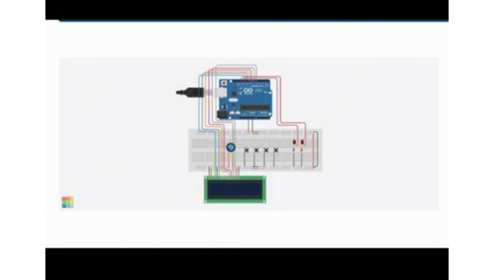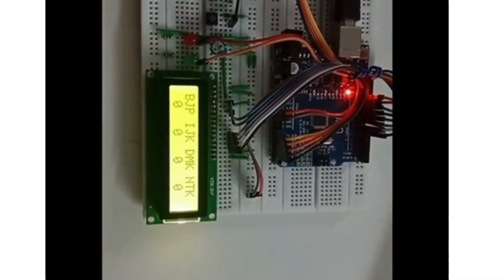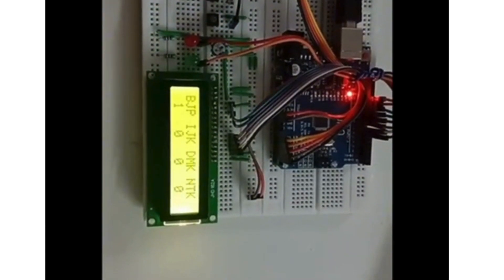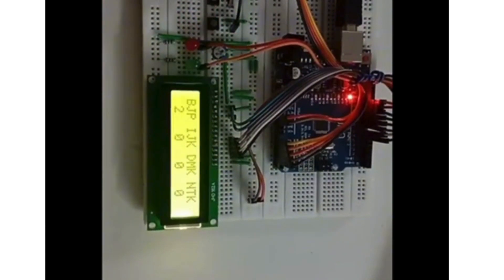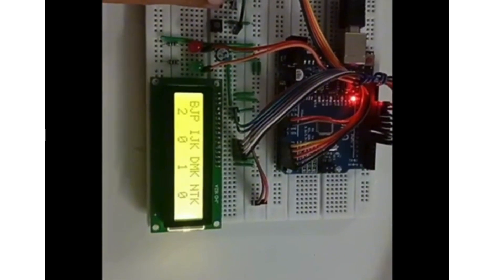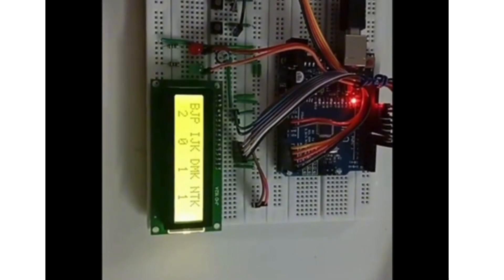The display shows the results and total number of votes for each candidate. In our demo, we can push the BJP push button two times by two candidates, then push the DMK and IJK push buttons one time each by one candidate. Finally, we can see the majority votes. The winning candidate is BJP, and the result will show BJP wins.